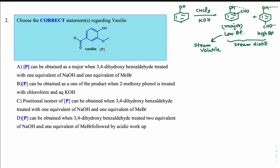In the Reimer-Tiemann reaction, the ortho product is strictly called salicylaldehyde — you should not use the term 'para-salicylaldehyde'; there is no such term. The para product is para-hydroxybenzaldehyde. If the ortho position of the OH group in para-hydroxybenzaldehyde is substituted by a methoxy group, that compound is known as vanillin.